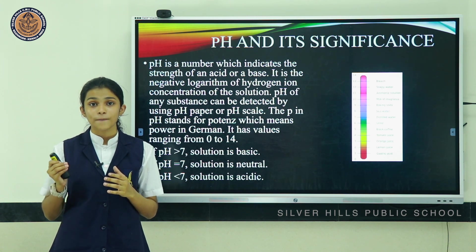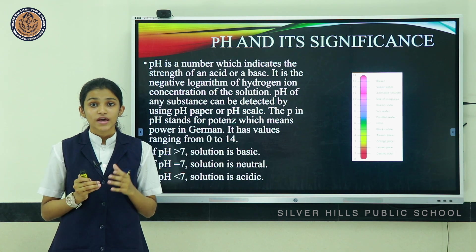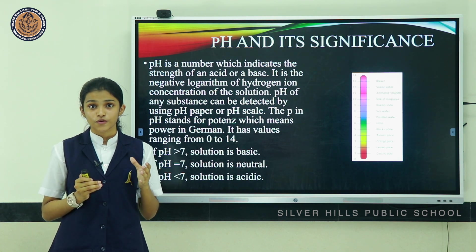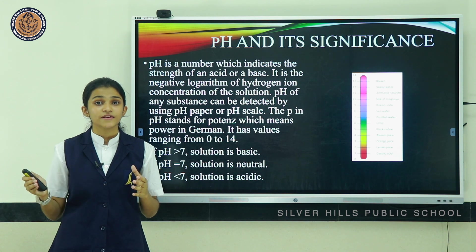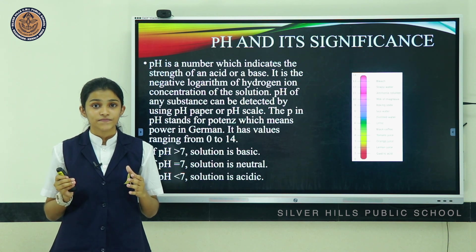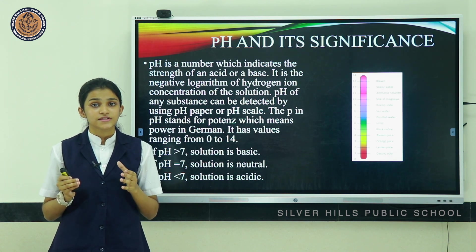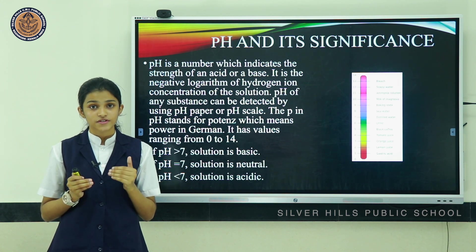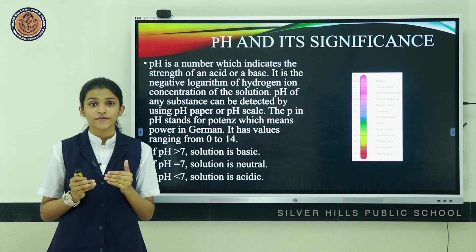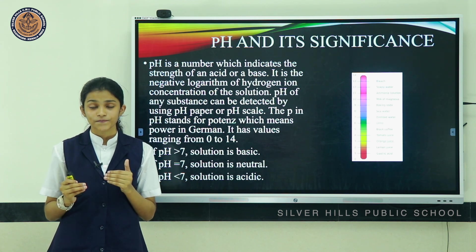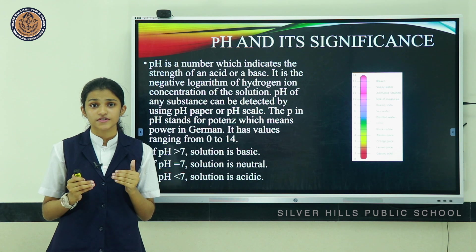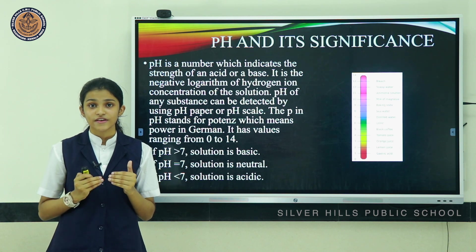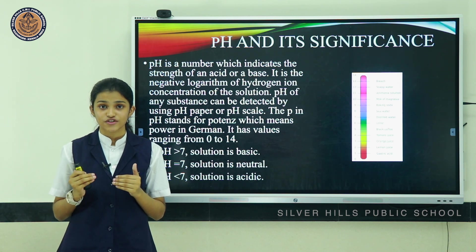The 'p' in pH stands for 'potenz,' which means power in German. pH has values ranging from 0 (very acidic) to 14 (very alkaline). If the pH of a substance is greater than 7, it is basic in nature. If the pH equals 7, it is neutral. If the pH is less than 7, it is acidic in nature.